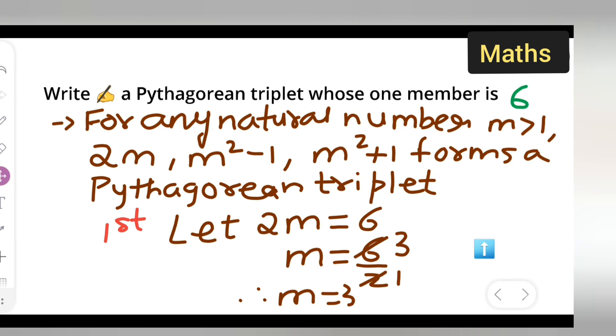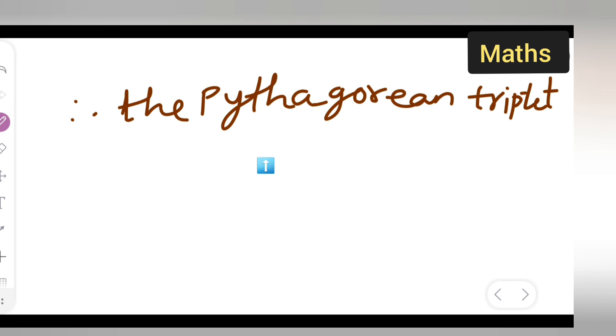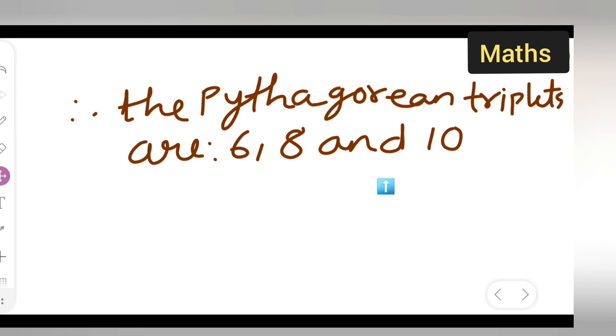Therefore, the Pythagorean triplets are 6, 8, and 10. These are your Pythagorean triplets.